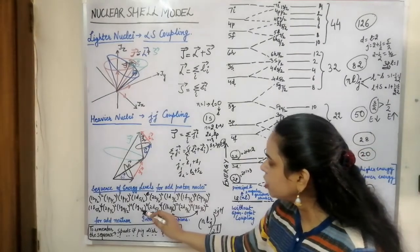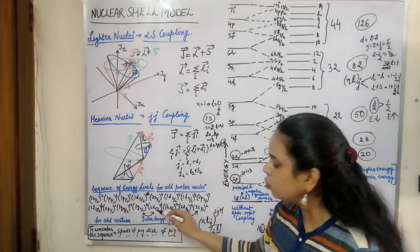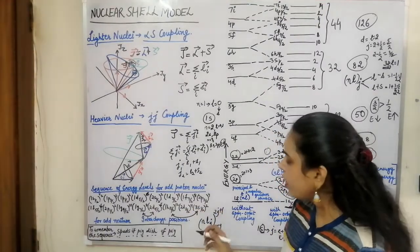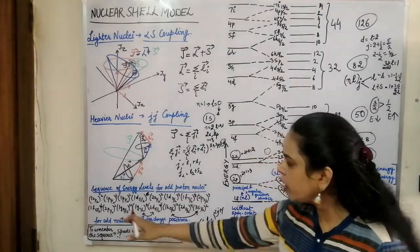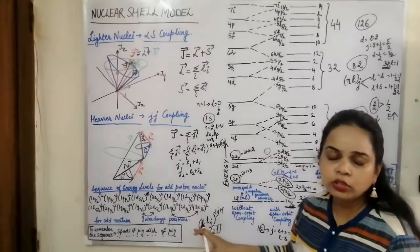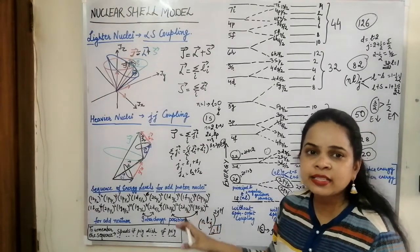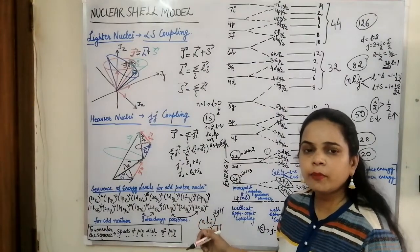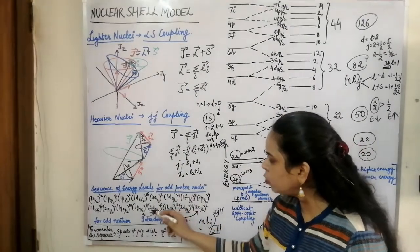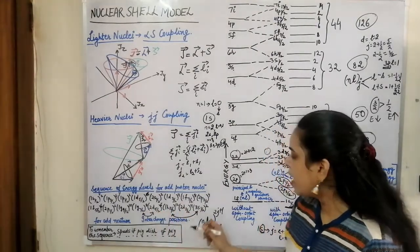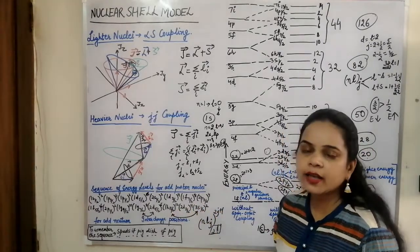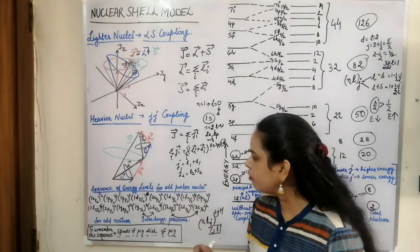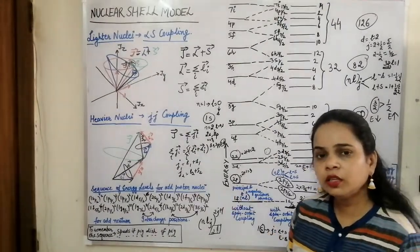For the odd neutron, there is a position interchange compared to the odd proton sequence: 1g(7/2) is interchanged with 2d(5/2), and 1h(11/2) is interchanged with 3s(1/2). This occurs because at higher states, neutrons prefer JJ coupling rather than LS coupling, causing a slight shift in the energy level positions. So 2d(5/2) is placed at lower energy than 1g(7/2), and similarly 3s(1/2) is at lower energy than 1h(11/2).